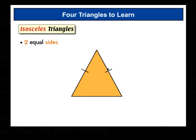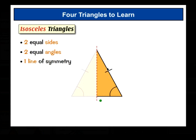Isosceles triangles have two equal sides, shown by these little dashes here. They have two equal angles, and if you fold it over like that, you'll see they have one line of symmetry. They have no rotational symmetry, though, so their order of rotational symmetry is 1.